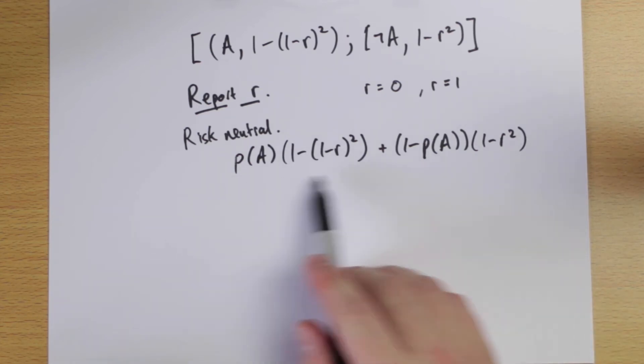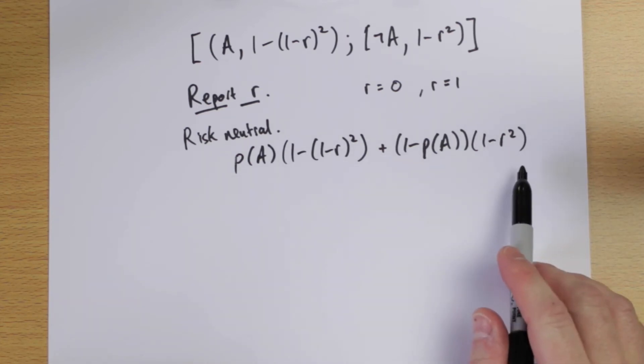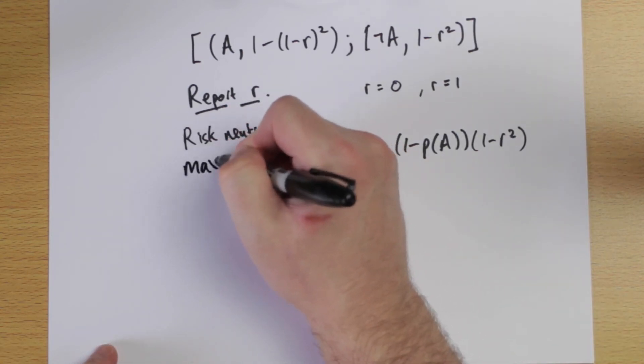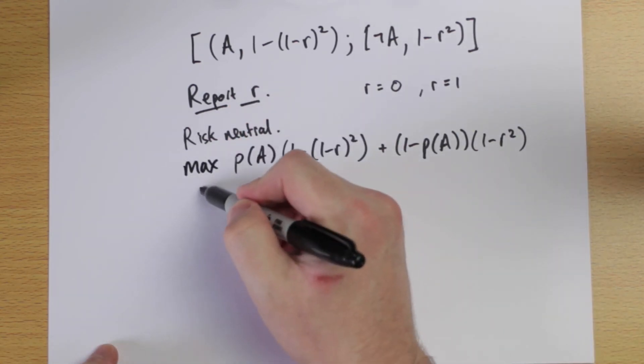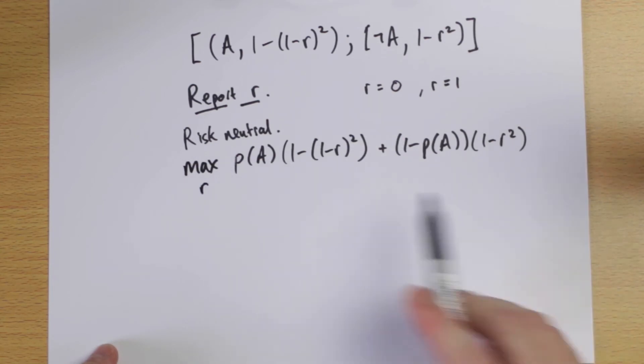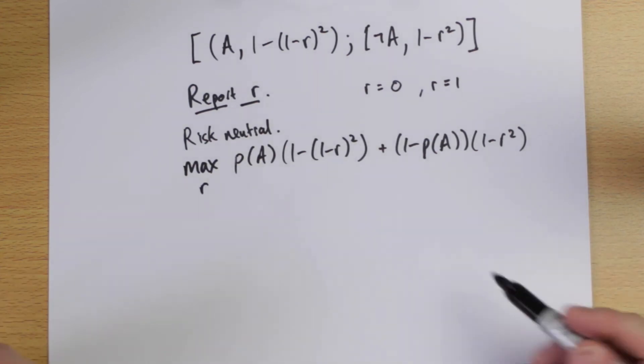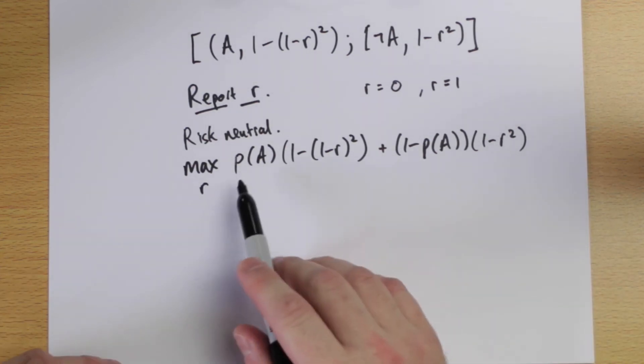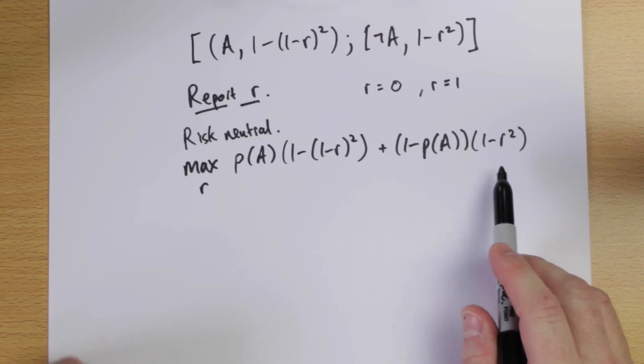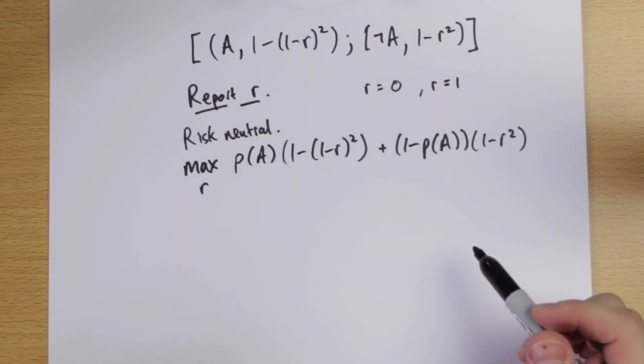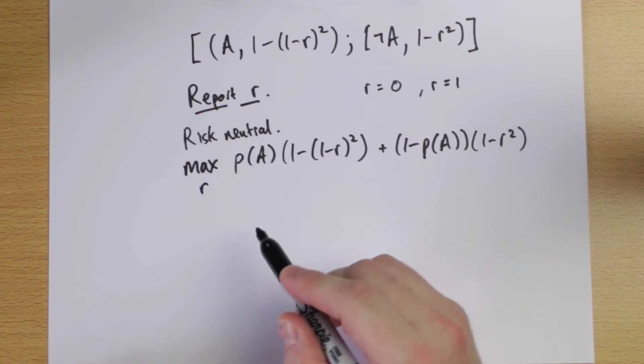So what do I want to do? This is my subjective expected utility. I want to maximize this expression by choosing R, okay? Now, if you notice, we've got a minus squared and minus squared here. So this is a concave function of R, okay? So the necessary and sufficient conditions for solving this problem will be the first order conditions, which I get by differentiating this with respect to R, and then finding the particular R star value that makes the derivative zero.